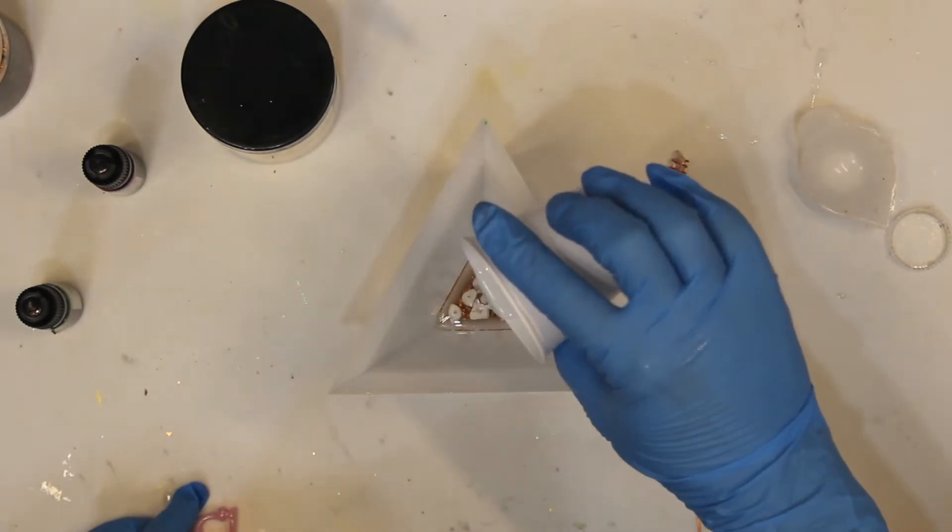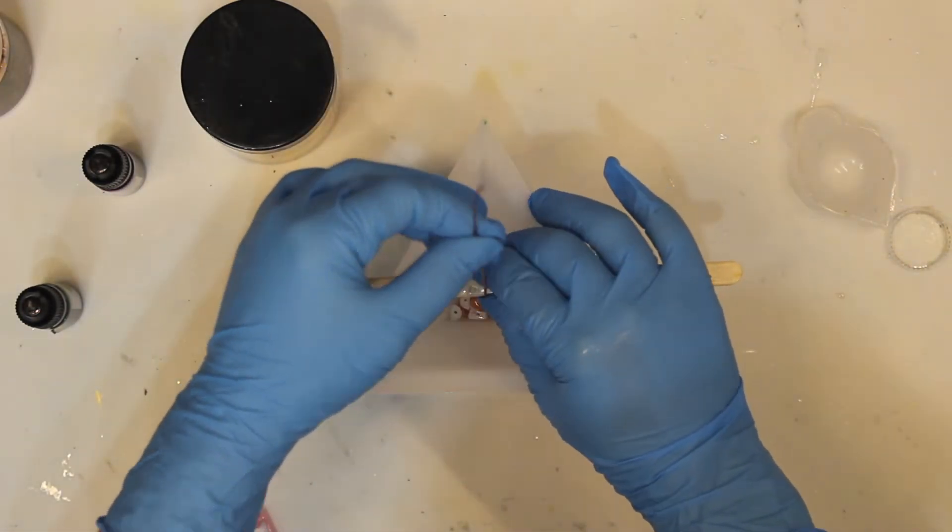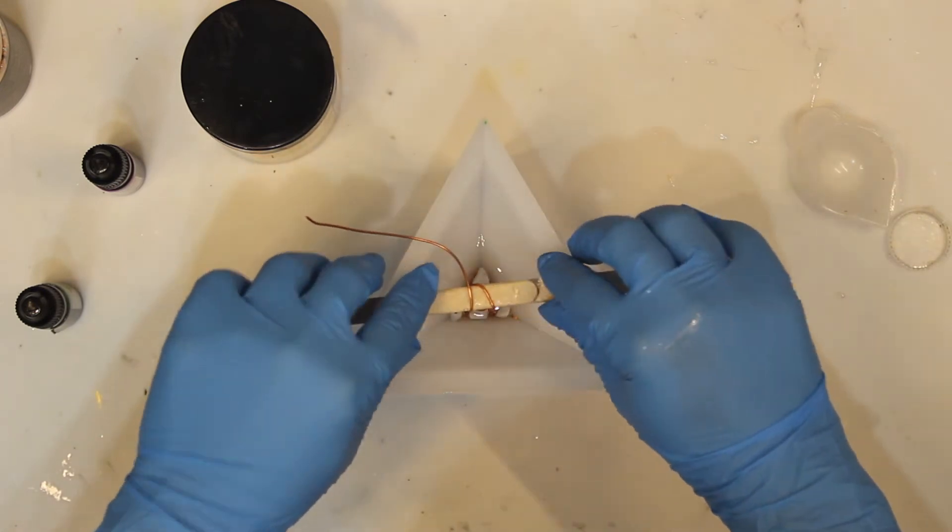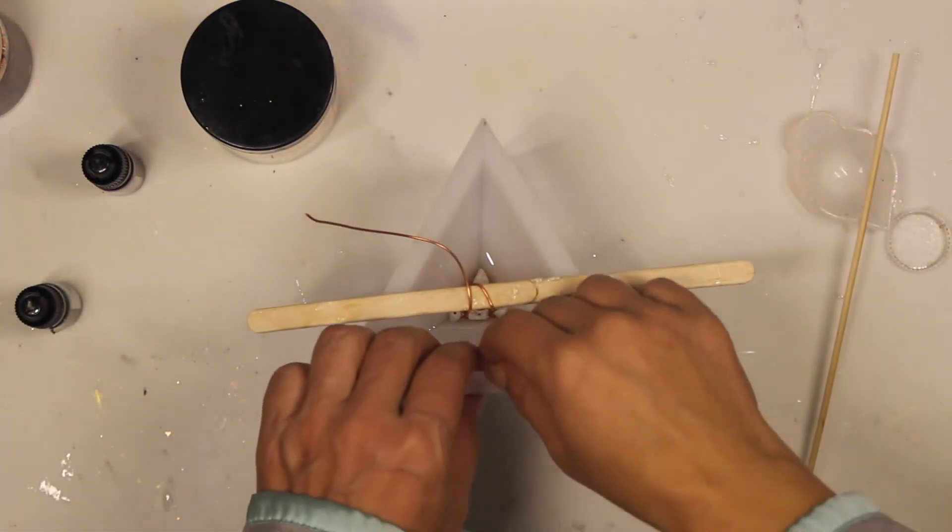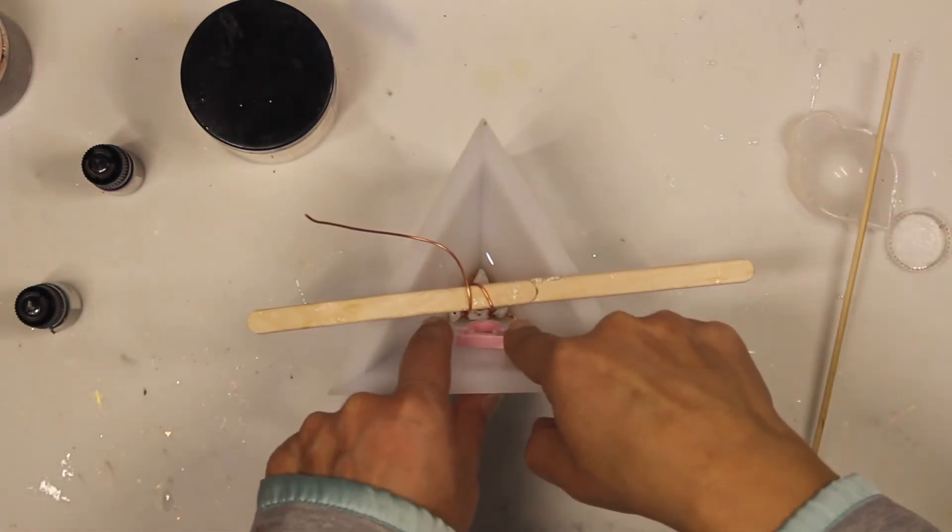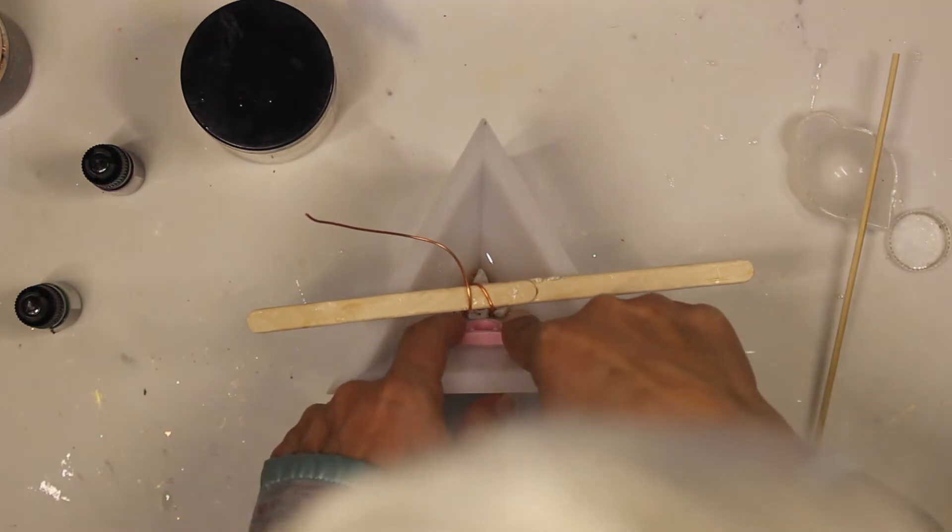After pouring clear resin, I will suspend the crystal from two popsicle sticks. When this layer is slightly cured but still sticky, I will place the epoxy cast symbols of Libra onto each side wall.